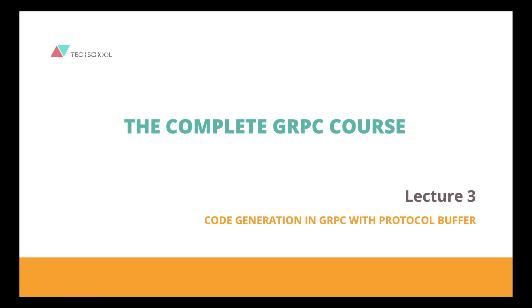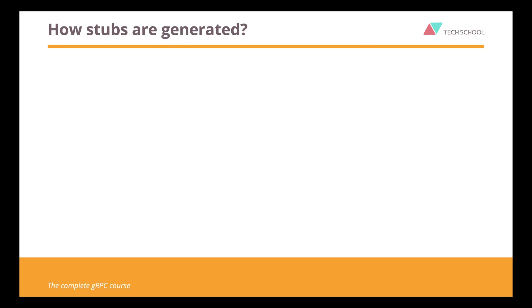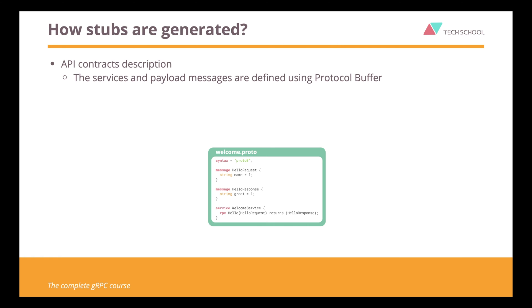Code generation is one of the most important features of gRPC. In this lecture, we're going to learn how it's done with protocol buffer. In order to generate stubs for the server and client, we first need to write the API contract, which includes a description of the services and their payload messages in a protocol buffer file that looks something like this.